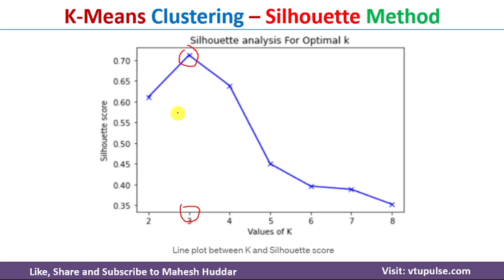In this video, I discussed what k-means clustering is, its disadvantages, and how to find the optimal value of k using the Elbow method and Silhouette method. I hope you understood the concept. If you liked the video, please like and share with your friends, press the subscribe button for more videos, and the bell icon for regular updates. Thank you for watching.